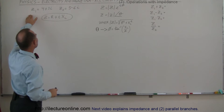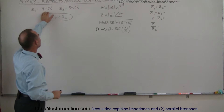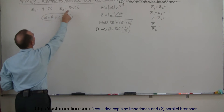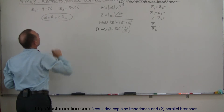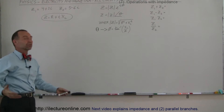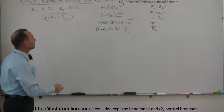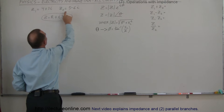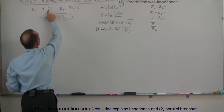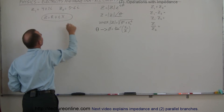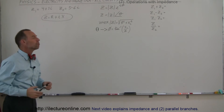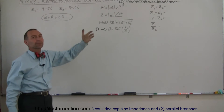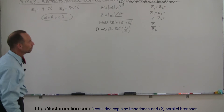Let's say we have two impedances: Z1 is 4 plus 3i, Z2 is 5 minus 6i. The real part is the resistance, and the imaginary part is the reactance, either from an inductor or a capacitor. If the imaginary number is negative, it came from a capacitor; if positive, it came from an inductor.